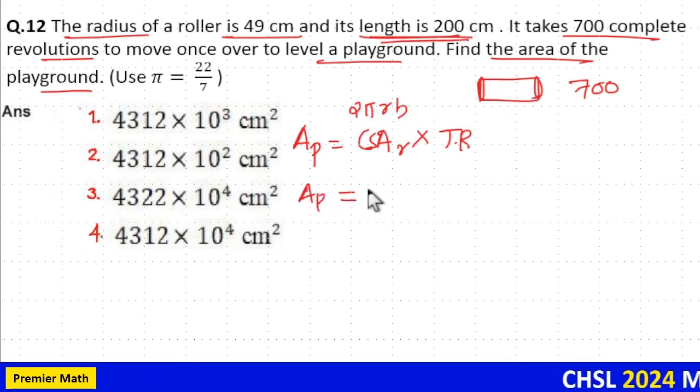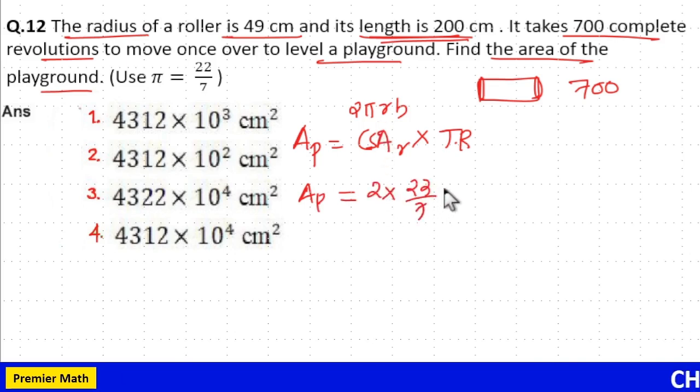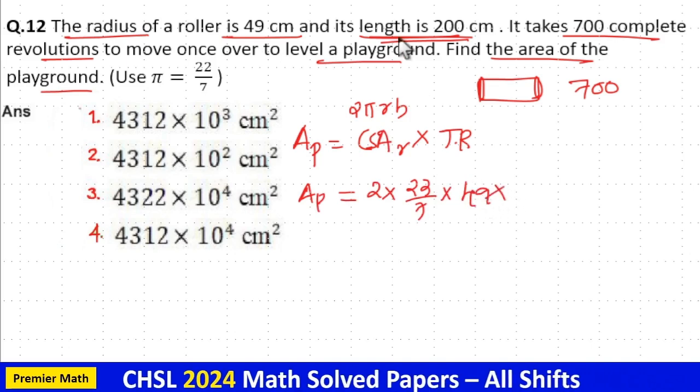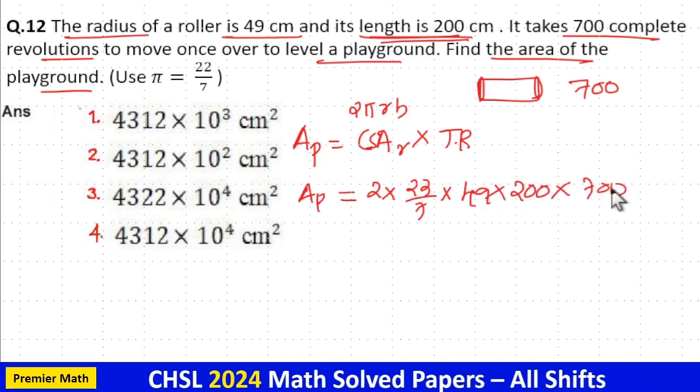So area of playground equals 2 times π, which is 22/7, times radius 49, times height (which is length) 200, times total revolutions 700.